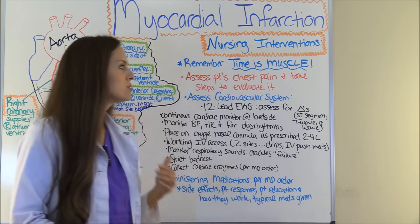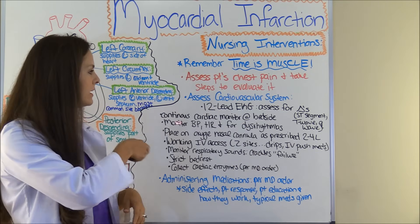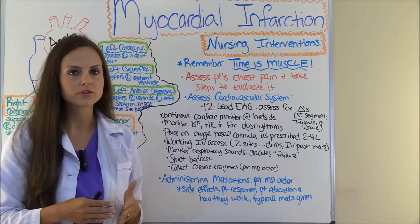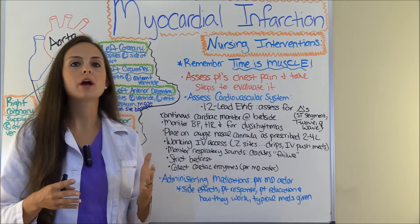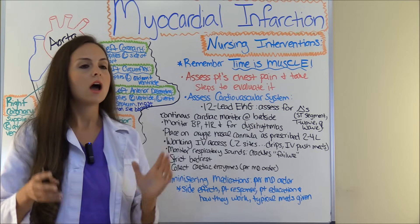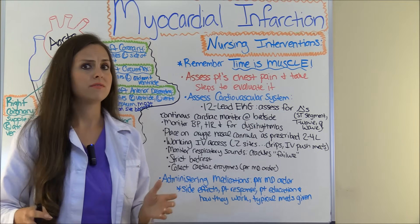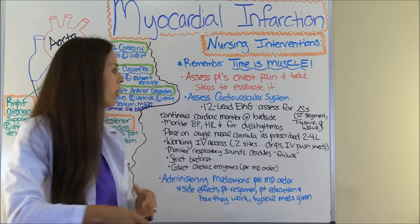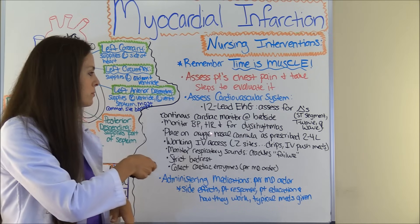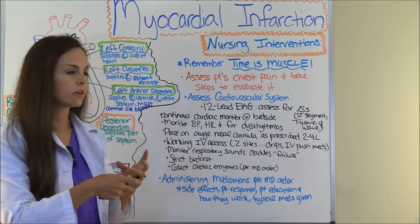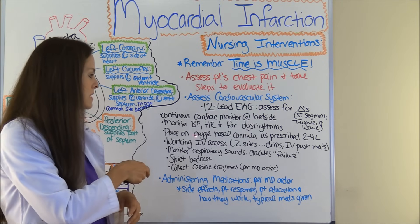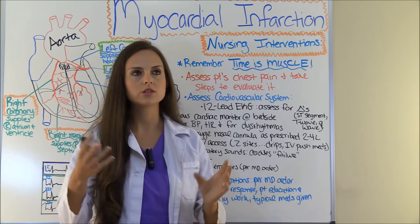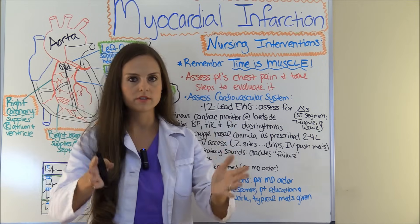Watch that video to figure out how to identify those findings. Put the patient on continuous bedside monitoring because they are at risk for life-threatening dysrhythmias like V-fib, V-tach, as well as atrial arrhythmias or AV blocks. Monitor their blood pressure and heart rate, and keep watching for those dysrhythmias. Place them on oxygen via nasal cannula as ordered by the physician — it's usually two to four liters.